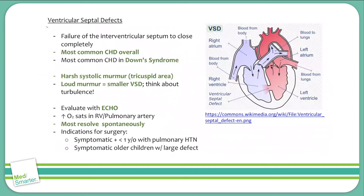A ventricular septal defect is another example of an acyanotic heart defect. We can see over here on the right side that there's a defect in the ventricle, and blood will flow down the pressure gradient from the left ventricle into the right ventricle. Similarly to ASD, this is due to a failure of the interventricular septum to close.